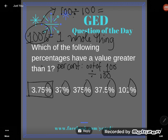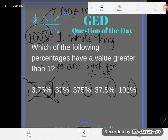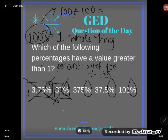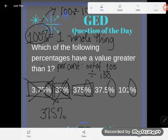Well, certainly 3.75%, three and some change is not greater than a hundred. 37% of course, is not greater than a hundred, but 375% sure is. That's one of the answers. 375% is significantly higher than 100%.